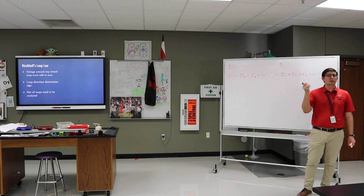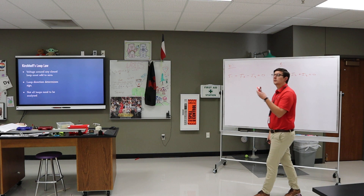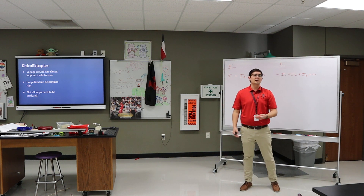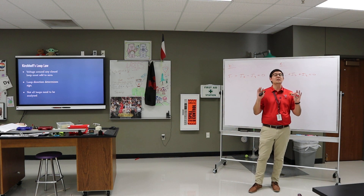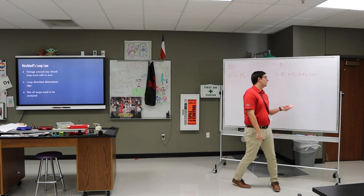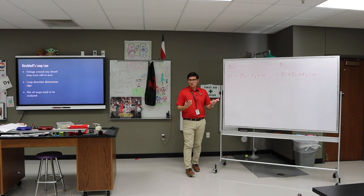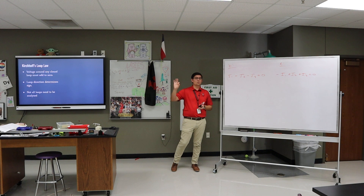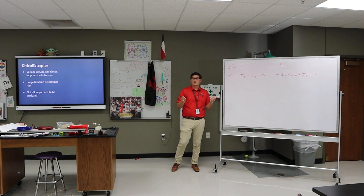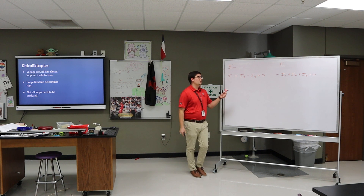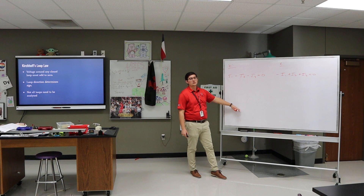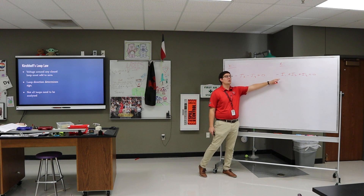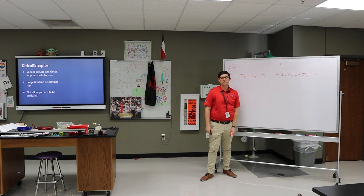What you'll see when you use the junction rule in conjunction with the loop rule is that you get a bunch of mathematical statements, and you don't need all of them. For example, if I have three currents in a circuit, I really only need three equations. You might generate four, five, or six, so just pick the three that make the most sense. If I have a list of five equations and two of them are the same, I shouldn't use the duplicate.